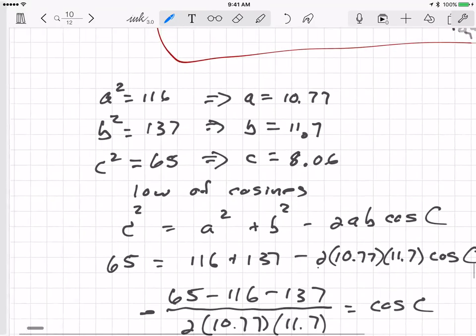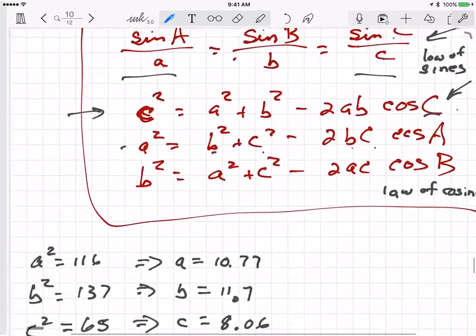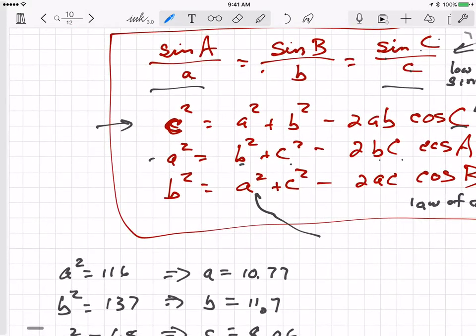So that should be angle B. Now we can use some of our other equations to check this answer, right? We can use the other, we can use this for example. We can try sine of B over sine B and see if that equals sine of A over sine A. We can also use these equations to double-check that answer. So let me end this right here.